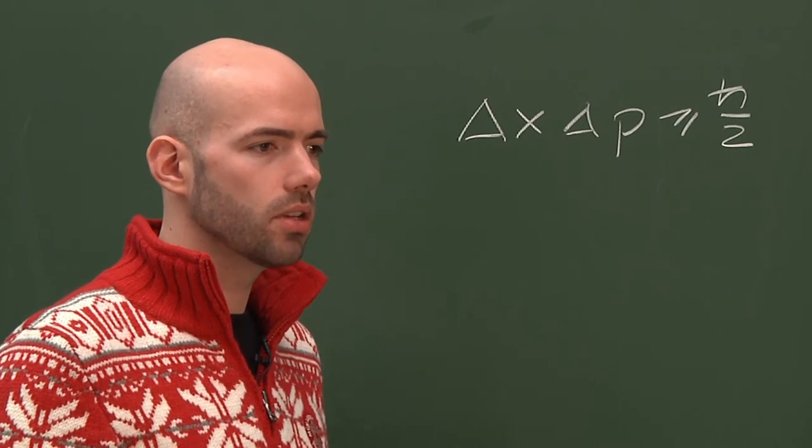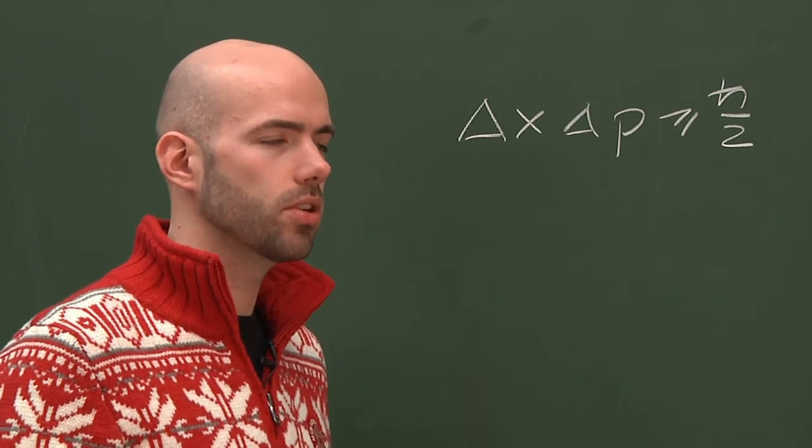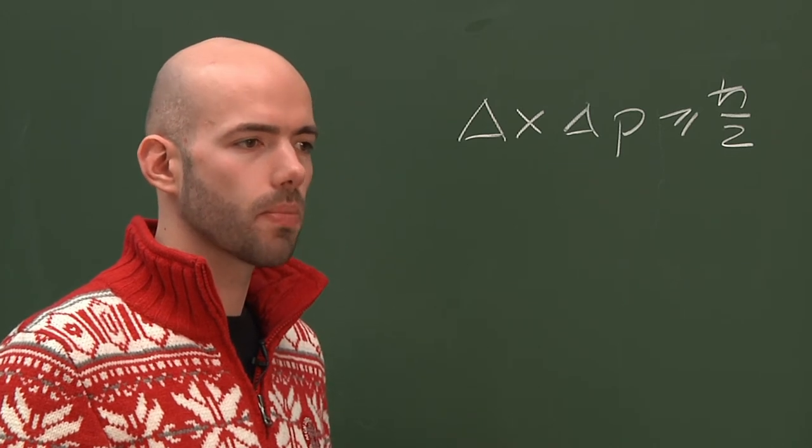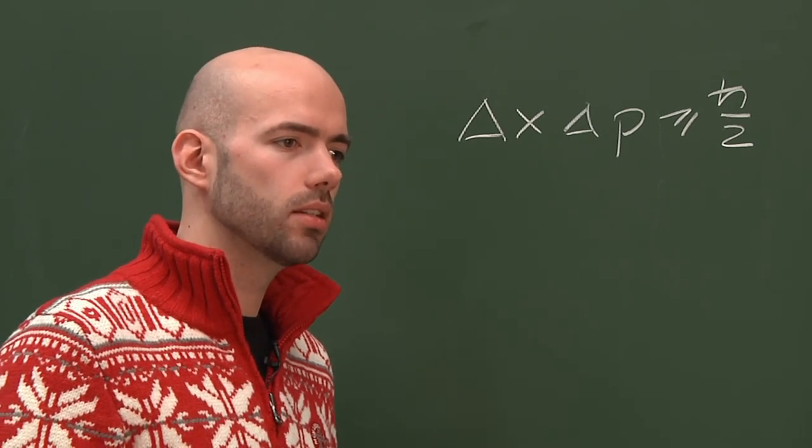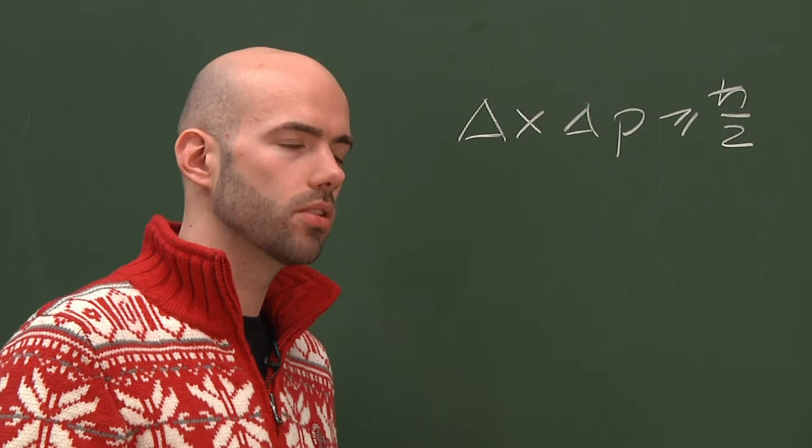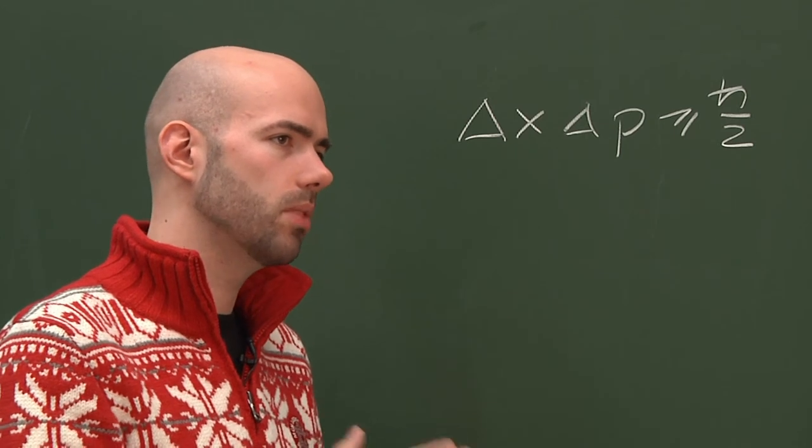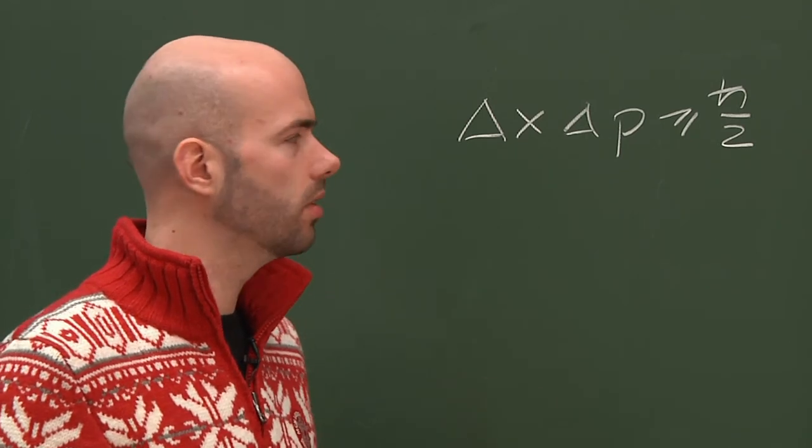But it is the uncertainty in the sense that repeated position measurements will not yield the same result. Instead, they will yield a position distribution which is centered around the mean position and has width delta x. The same holds for delta p.